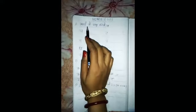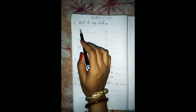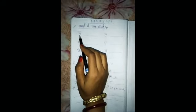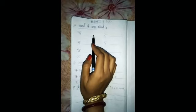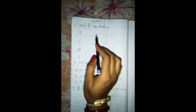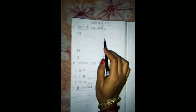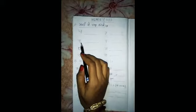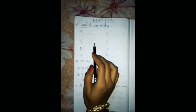Aksharose sabda likho — you have to write words beginning with these letters. Start with me. What is this? This is chau. Chau se charkha. What is this? This is tau. Tau se tomato. What is this? This is ga. Ga se gamla.